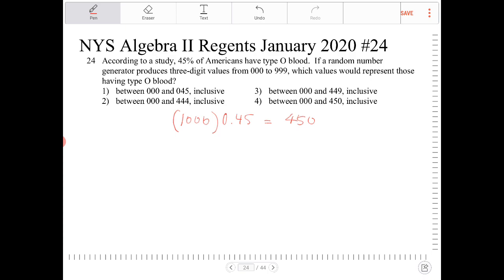So looking at this, option 1, 000 and 045 inclusive, no, that would be 46 different numbers.